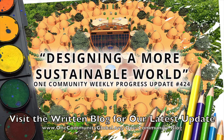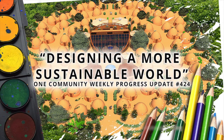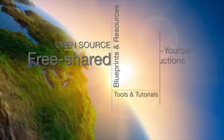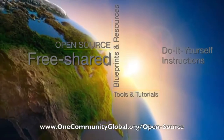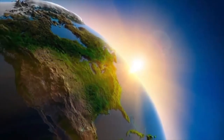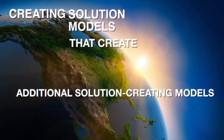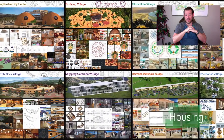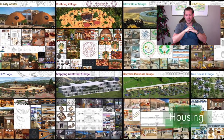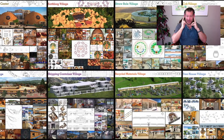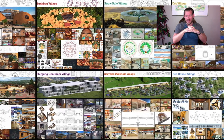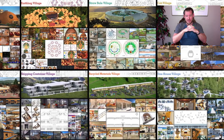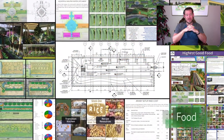Designing a more sustainable world. One Community Weekly Progress Update number 424. One Community is a 501c3 nonprofit organization. We are creating open source and free shared blueprints and resources, tools and tutorials, and do-it-yourself instructions for highest good living — creating solution models that create additional solution-creating models in the service of all life on this planet. My name is Jay Sabel and I'm the Executive Director of the One Community 501c3 nonprofit. This is our May 9th, 2021 edition of our Weekly Progress Update.